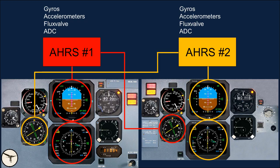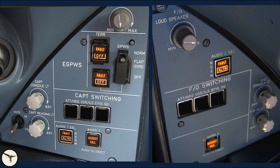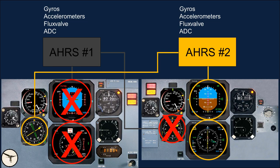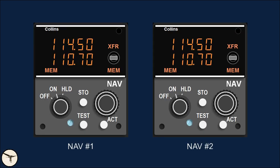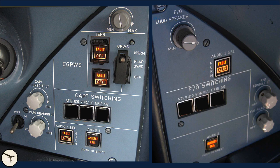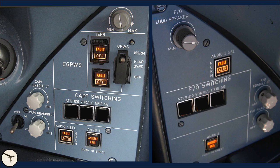The switching panel addresses failures of attitude heading reference systems. If AHRS number 1 fails, the captain loses attitude and heading information on the EHSI, while the first officer loses heading information on the RMI — and vice versa for AHRS number 2. The affected pilot presses the switching button to allow instruments to receive information from the other AHRS. If a VOR/ILS receiver fails, the pilot on the affected side can receive information from the other receiver by pressing the corresponding push button. If an SGU fails, the affected pilot can receive copied images of the EFIS from the other pilot side.